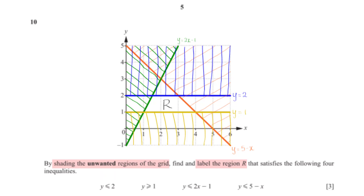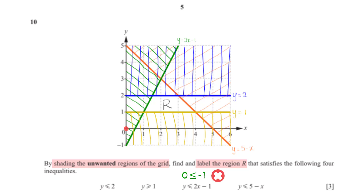For y ≥ 1, testing the origin gives 0 ≥ 1, which is false, meaning the region below y = 1 does not satisfy the inequality, so we shade that region. For y ≤ 2x minus 1, testing the origin gives 0 ≤ negative 1, which is false, so we shade the region above the line y = 2x minus 1.